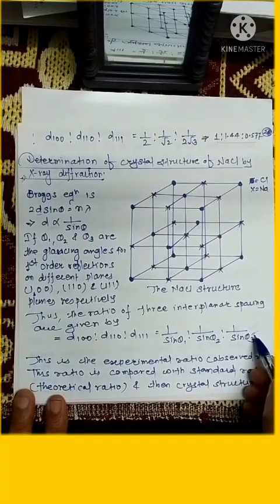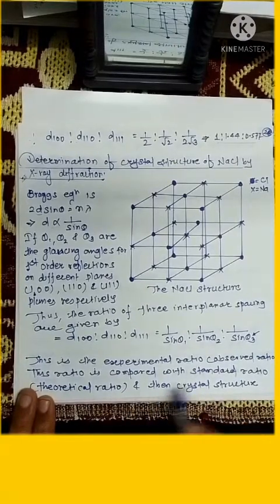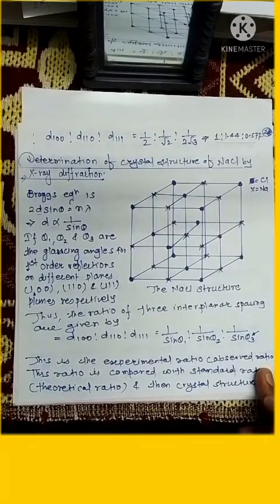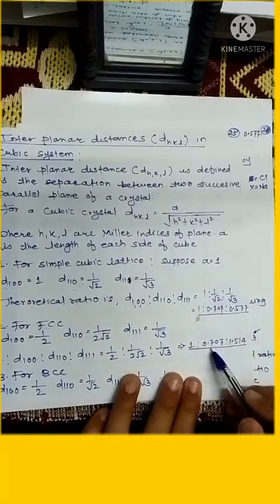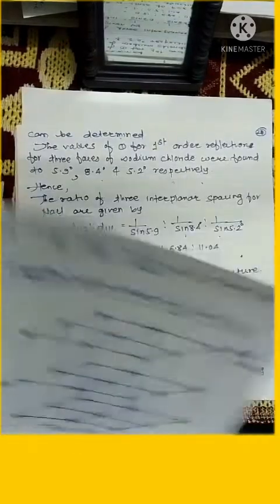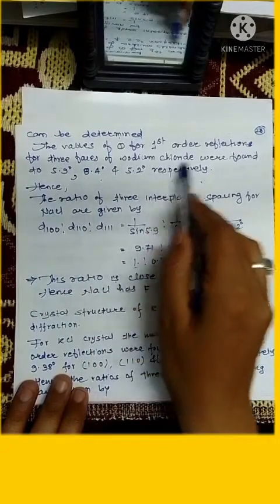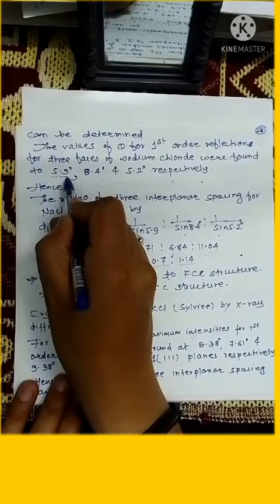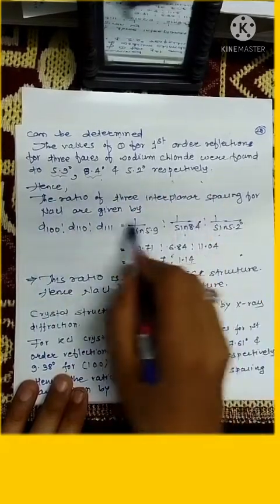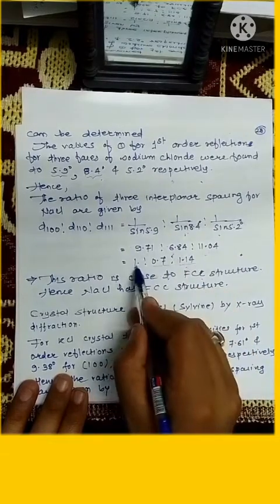These theta values are experimentally obtained, so this is the experimental ratio. This ratio is compared with standard ratio. Now what is the standard ratio or theoretical ratio? These are the values of your theoretical ratios. Now we are going to see, and then crystal structure can be determined. The values of theta for first order reflection for three planes of sodium chloride were found to be 5.9 degree, 8.4 degree and 5.2 degree.